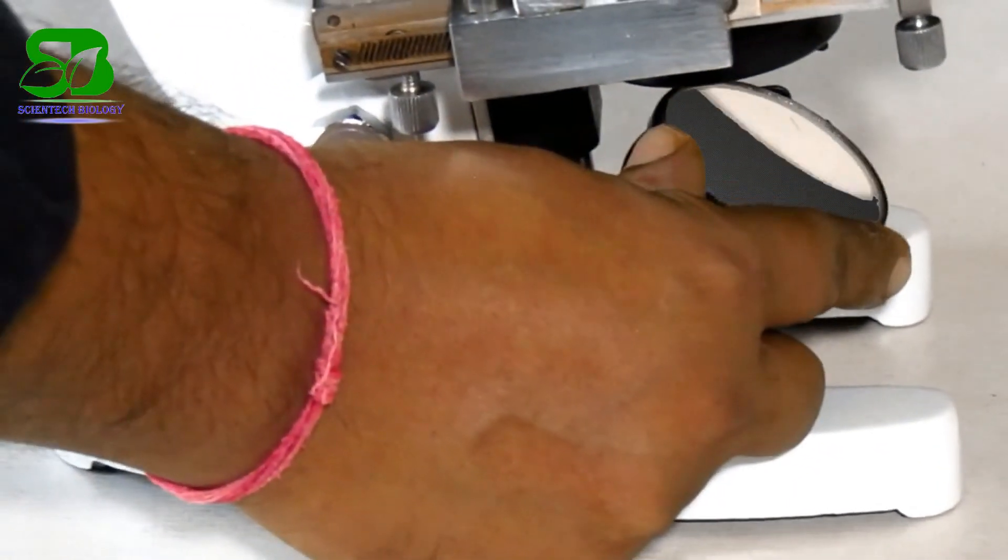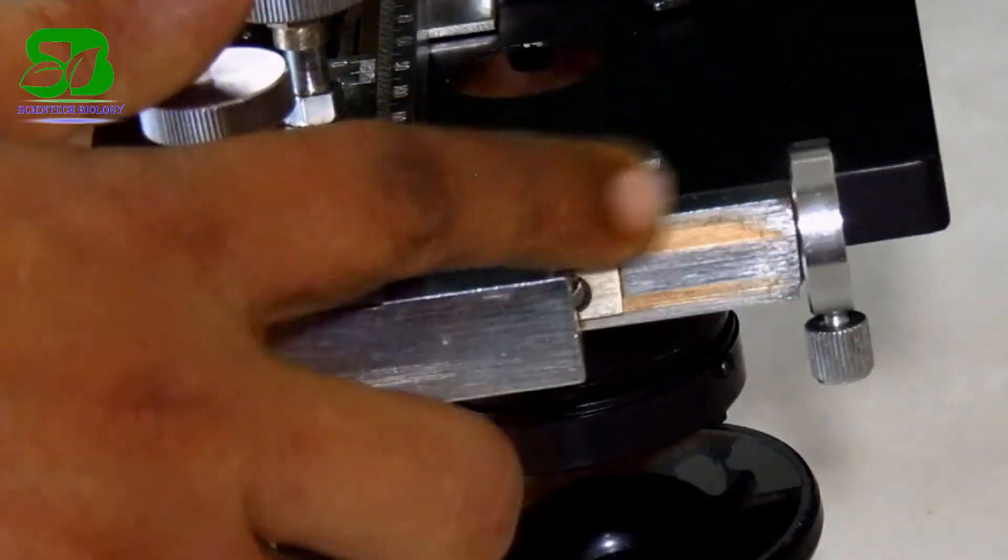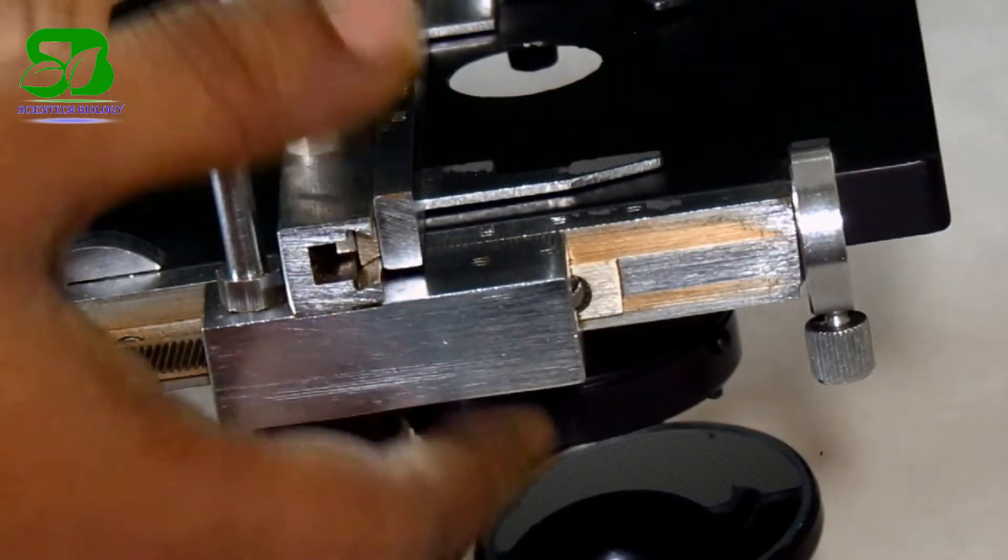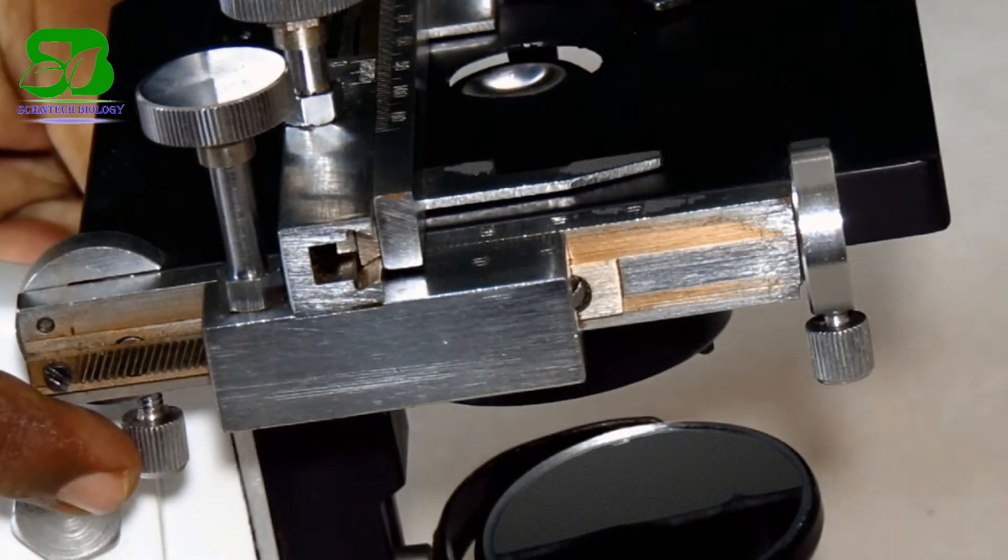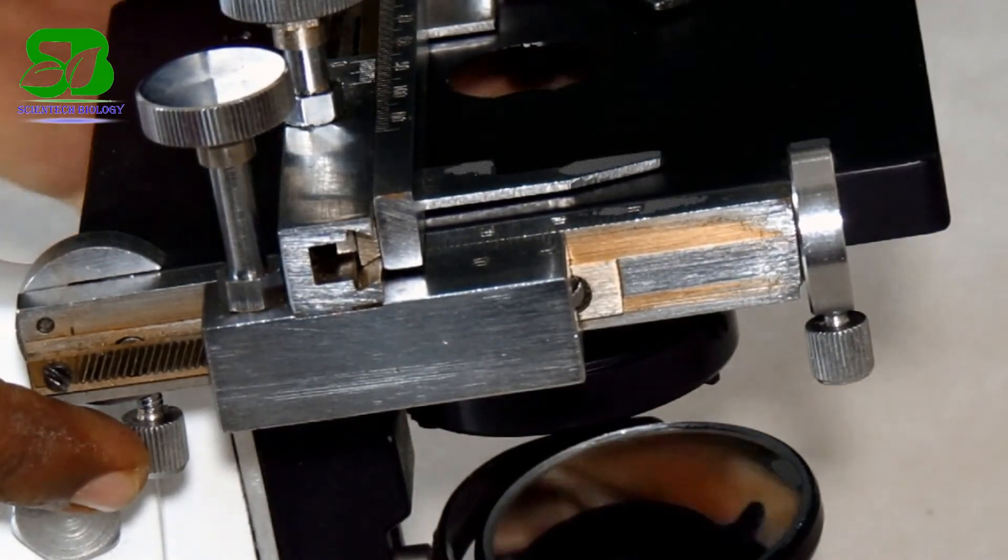Here at the bottom you can see a plano-concave mirror that reflects light to the object for a clear view. Just below the stage there is a condenser consisting of iris diaphragm. Through this point you can open or close the diaphragm completely.